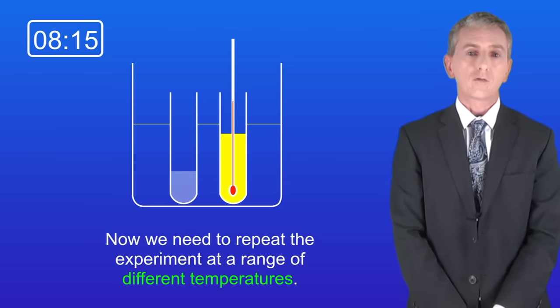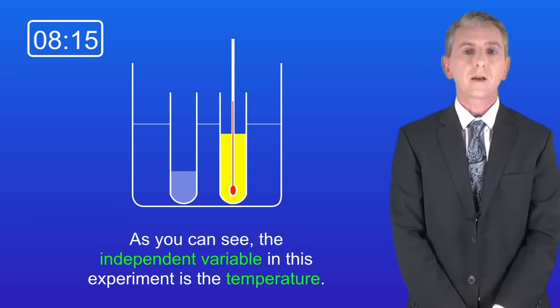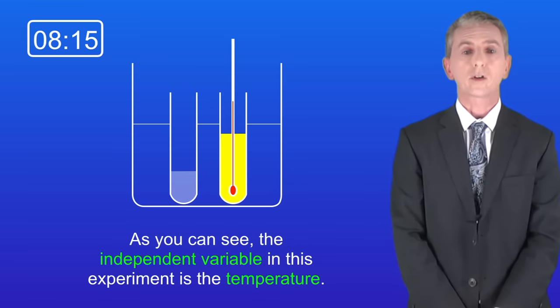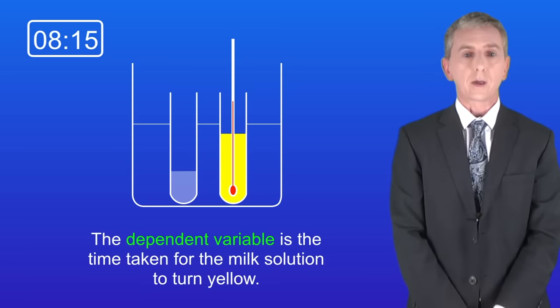Now we need to repeat the experiment at a range of different temperatures. So as you can see, the independent variable in this experiment is the temperature. The dependent variable is the time taken for the milk solution to turn yellow.